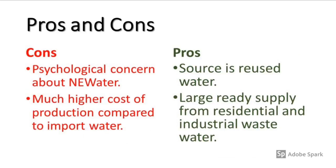The pros of NEWater: the source — wastewater — is abundantly produced both residentially and industrially, so supply is not a concern. The cons: the main challenge when NEWater was first introduced was psychological — people were uncomfortable drinking treated sewage. The larger ongoing con is cost; NEWater is significantly more expensive to produce than importing raw water from Malaysia, though importing is not a long-term solution.